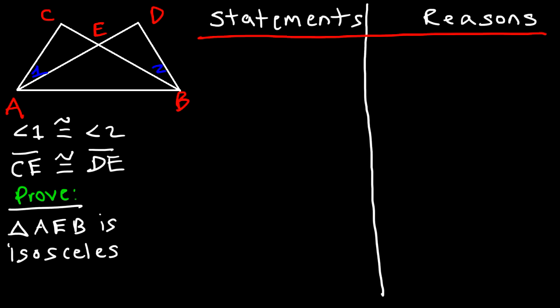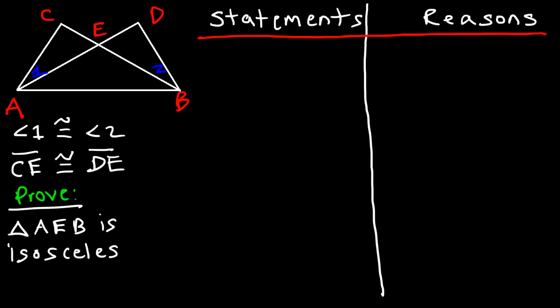Before we begin, let's create a mental outline. To prove triangle AEB is isosceles, we need to show AE is congruent to EB. In order to show those two segments are congruent, we need to prove that triangle ACE is congruent to triangle BDE. Let's work toward that.